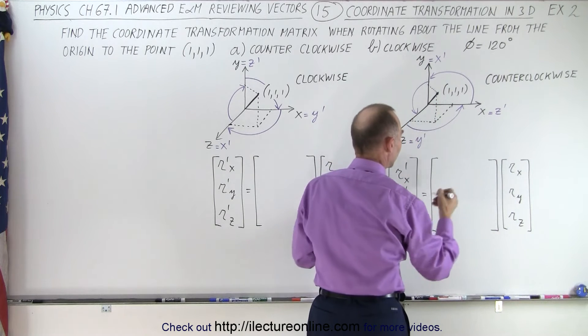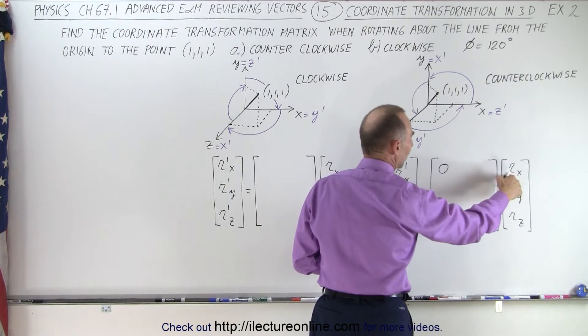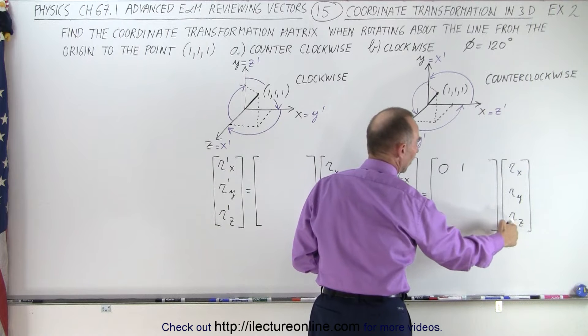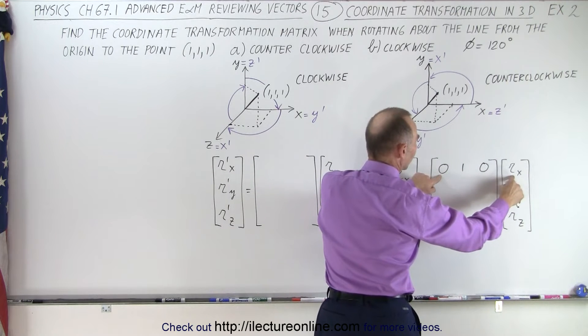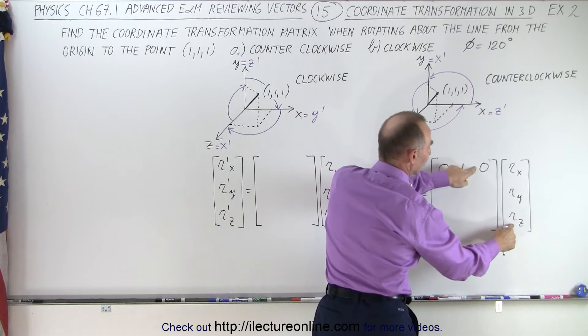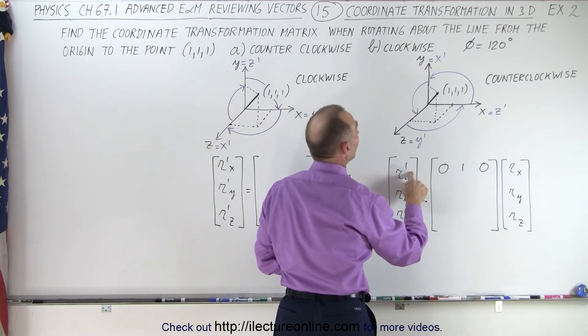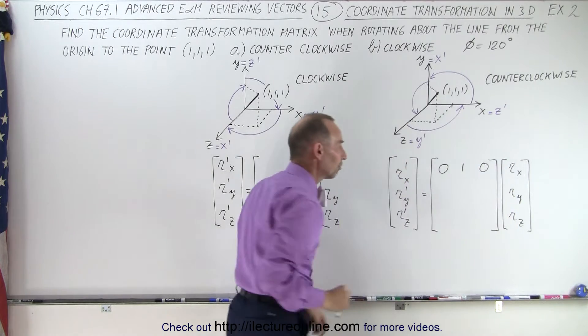We can do that by plugging something in here. We want to multiply 0 times RX, multiply RY times 1, and multiply RZ times 0. Notice when I multiply 0 times RX, I get 0. 1 times RY, I get RY. 0 times RZ, I get 0. So I get 1 times RY equals RX prime. So X prime equals Y, which will allow us to do that.